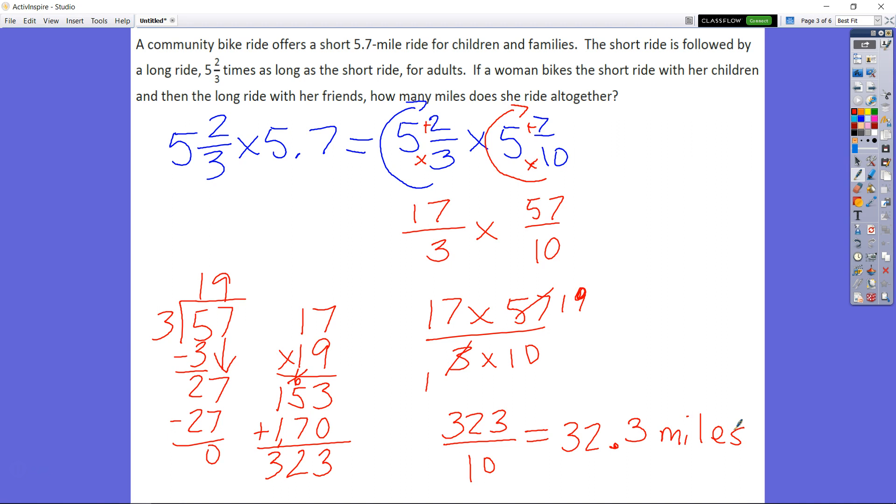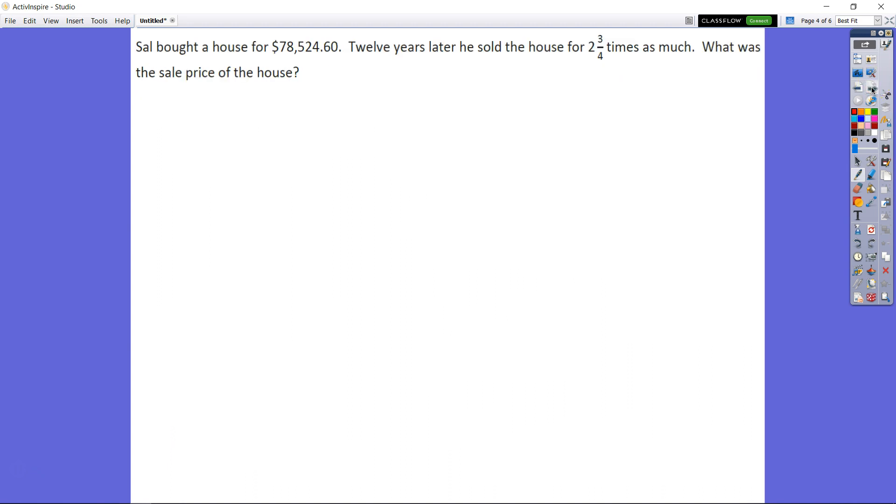So now if I was to go ahead and add that together, I know that she rode 32 and 3 tenths of a mile for the long ride. That was 5 and 2 thirds times as long. And then I will add it to the 5 and 7 tenths of a mile for the short ride. So now I can find out how much she rode in all. That's 38 miles altogether.